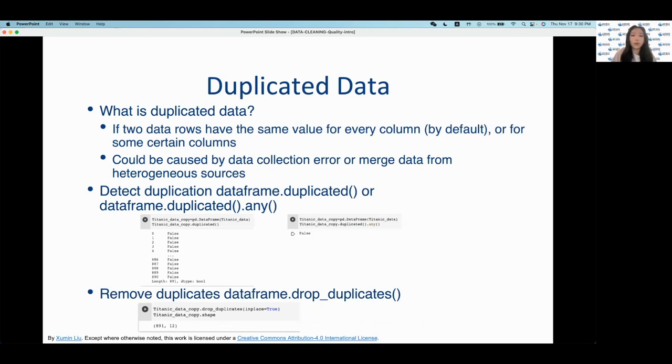Another data quality issue that arises is duplicated data. So what exactly comprises of duplicated data? If two data rows have the same value for every column by default, or for some certain columns, or it could be caused by data collection error or merged data from heterogeneous sources. Duplication can cause many issues such as distorting data distributions, misleading a machine learning model, and resulting in some inaccurate analysis results.